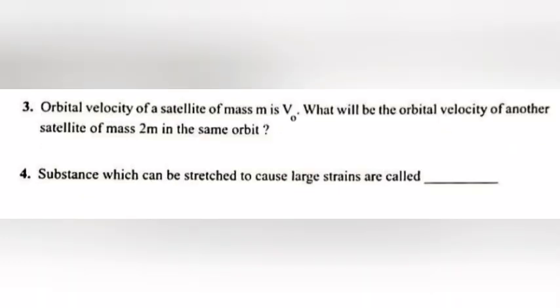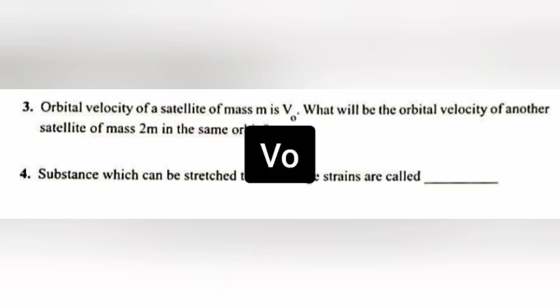Question 3: Orbital velocity of a satellite of mass M is V₀. What will be the orbital velocity of another satellite of mass 2M in the same orbit? Answer: V₀.